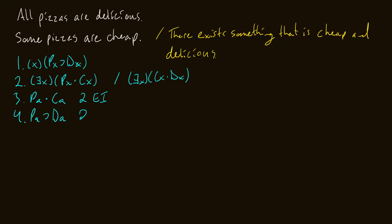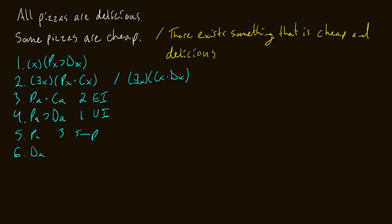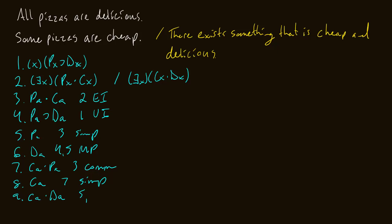Now let's finish the proof. Line three came from line two, existential instantiation. Line four came from line one, universal instantiation. What I can do now is simplify line three to just get PA — that comes from line three and simplification. Then we get a modus ponens and conclude that A is in fact delicious — that came from lines four and five and modus ponens. On line seven, I use commutativity to get CA and PA — that came from line three and commutativity.